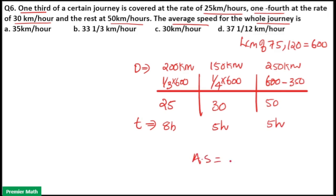That means average speed is equal to total distance is equal to 600 km and total time is equal to 8 plus 5 plus 5 that is 18. That is equal to 6 into 3 is 18, 6 into 100 is 600.